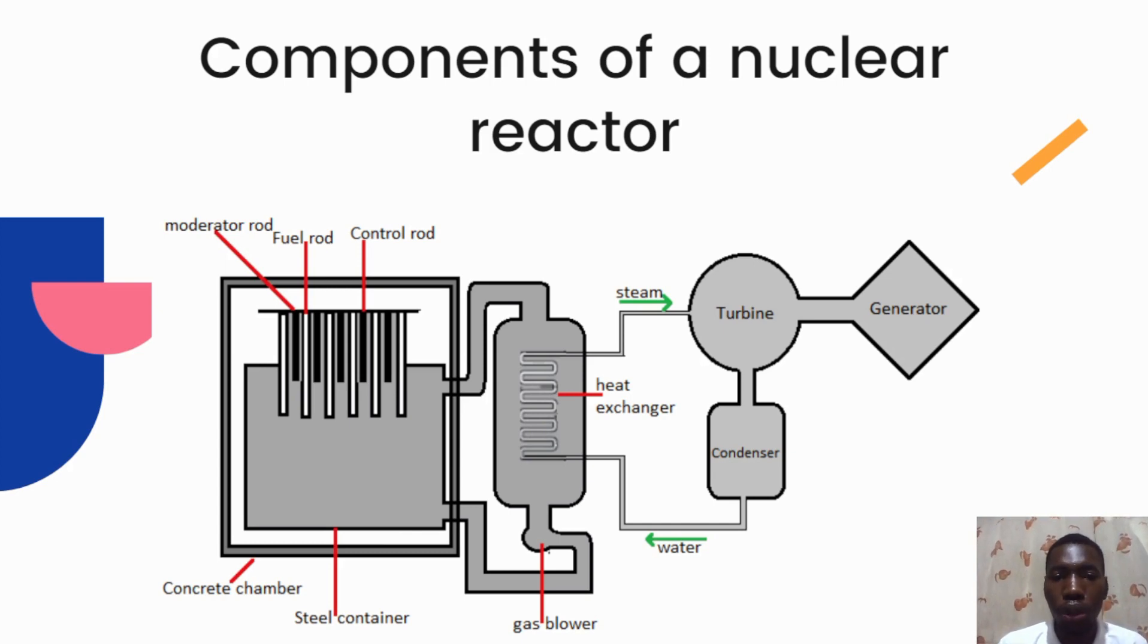The control rods, made of materials such as boron or cadmium, are used to absorb neutrons and control the rate of the fission reaction within the nuclear reactor in order to avoid accidents or excessive radioactivity in the reactor.